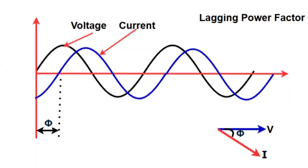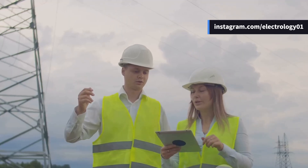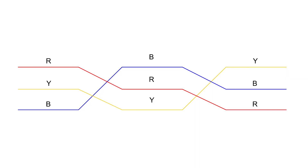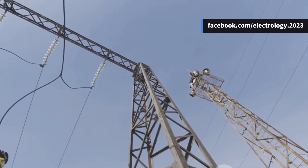Imagine one phase dragging behind in voltage while the others run ahead — the system would become unstable. To avoid this, engineers use a clever trick called transposition. At regular intervals along the line, the positions of conductors are swapped so that each one occupies every position equally over the full length. The result is that the average inductance of all phases becomes the same and balance is restored.